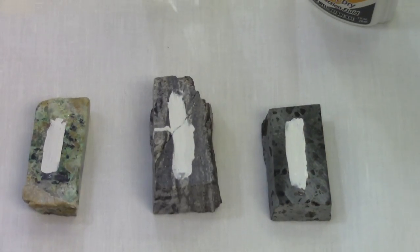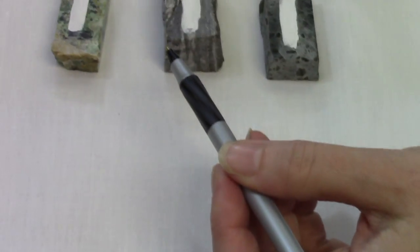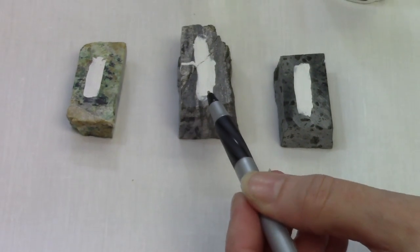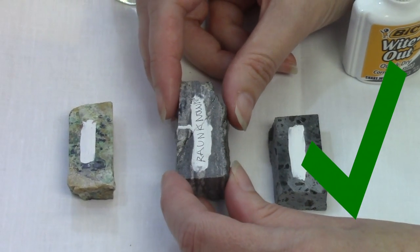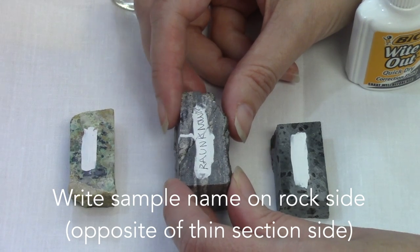Once they're dry, you can write the sample name or number on the rock. This is perfectly acceptable and you don't need to go any further than this.